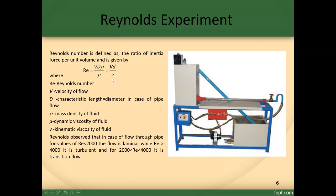Here V is the velocity of flow, d is the characteristic length (diameter in case of pipe flow), ρ is the mass density of fluid, μ is the dynamic viscosity of fluid, and ν is the kinematic viscosity of fluid. Reynolds observed that for values of Re less than 2,000, the flow is laminar; while Re greater than 4,000, it is turbulent; and for Re between 2,000 and 4,000, it is transition flow.